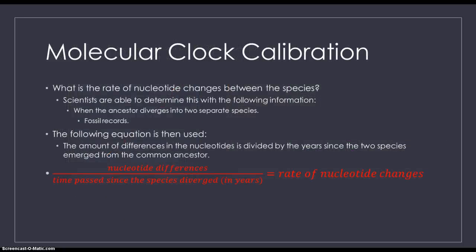Now molecular clock calibration. How does one determine the rate of nucleotide changes among the species? Well, they first need to know when the two species diverged. Scientists usually figure this out by using fossil records. Then they take the amount of nucleotide differences between the two species currently, and then divide that by the time passed since the species diverged from one another. This gives you the rate of nucleotide changes. This is a very important formula for my section and you guys should know it is fairly simple.